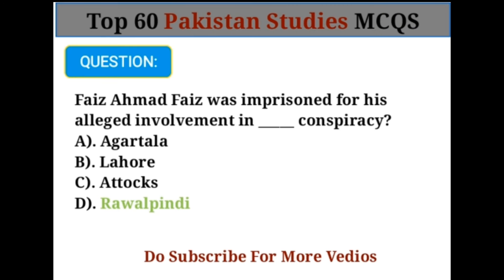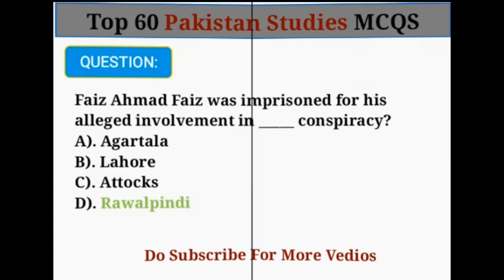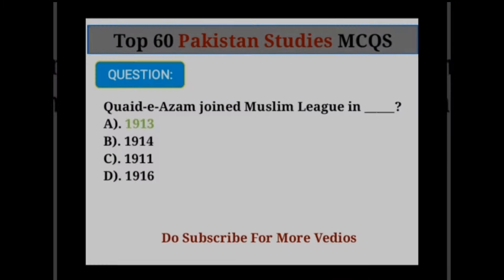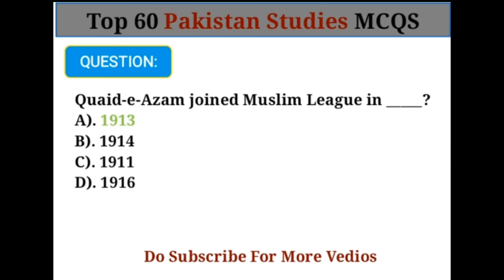Faiz Ahmed Faiz was imprisoned for his alleged involvement in the Rawalpindi Conspiracy. Option D: Rawalpindi. Next question: Quaid-e-Azam joined Muslim League in Option A: 1913.